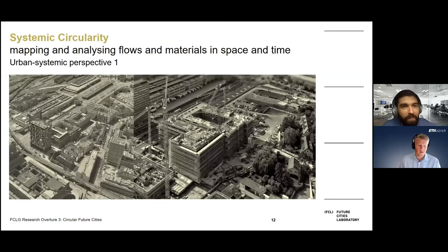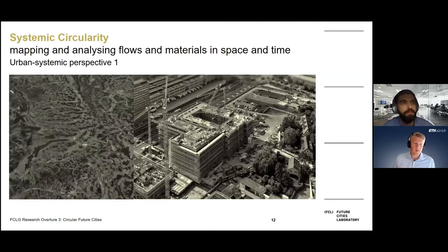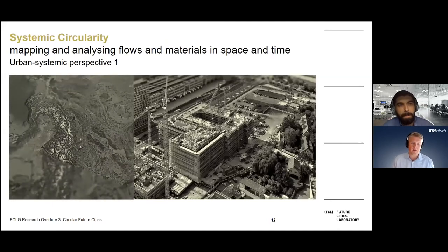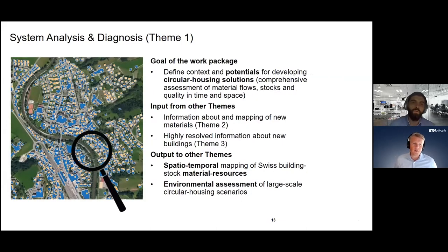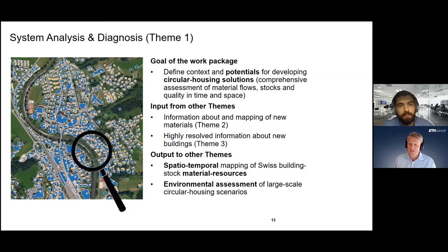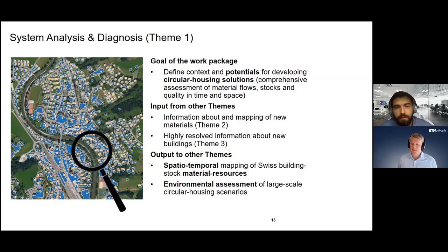Our first urban systemic perspective is systemic circularity — mapping and analyzing flows and materials across space and time. We have two research themes within this. The first is system analysis and diagnosis: we want to identify environmental hot spots with regard to material type and simultaneously estimate when and where resources are needed, so they can be released from the building stock.